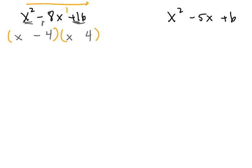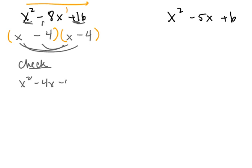What two things multiply to give me 2x squared? 2x and x — really, there's only one choice there, so you could write that in pen. Now, for the negative 2: what two things multiply to give me negative 2? It's 2 and 1. The choice is where to put the 2 and where to put the 1. I'm going to guess that negative 2 goes here and positive 1 goes here, because negative 2 times positive 1 is negative 2.